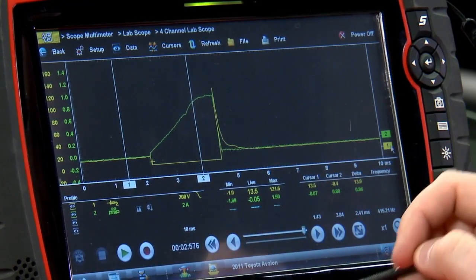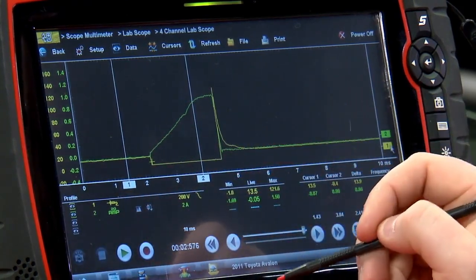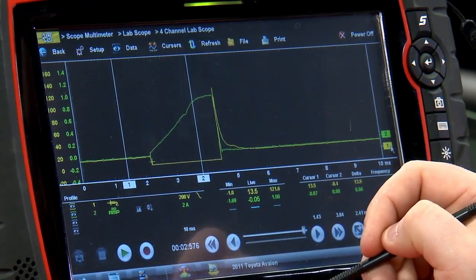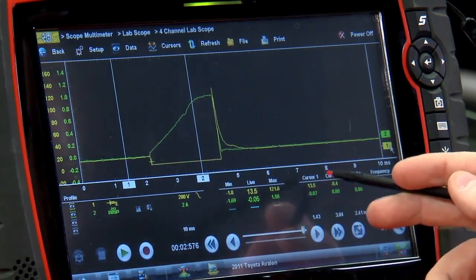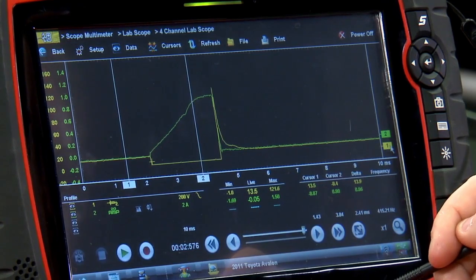The yellow line is the voltage going through that fuel injector and the green line is the amperage going through this fuel injector. If I take a measurement at cursor one for the voltage, we should see pretty close to alternator voltage. So 13.5 volts, that's pretty good.